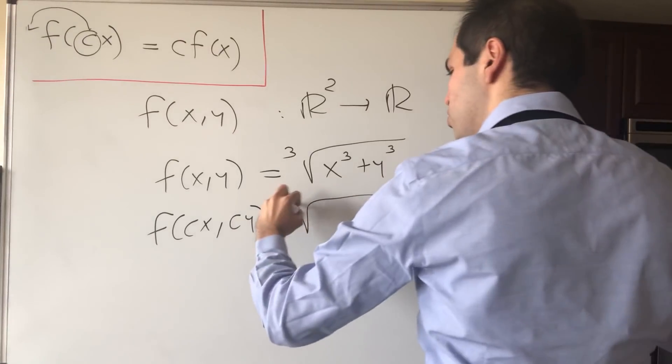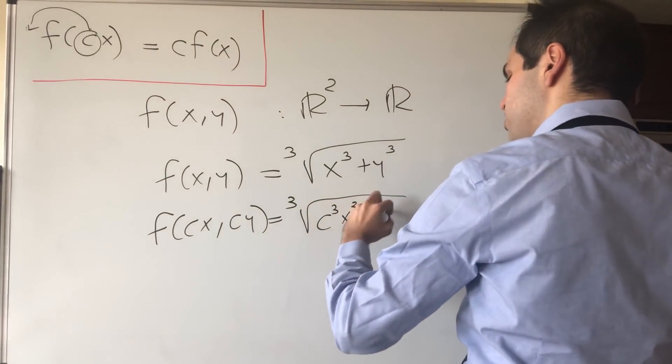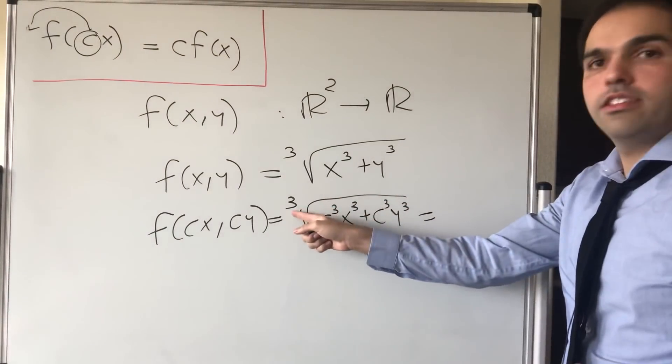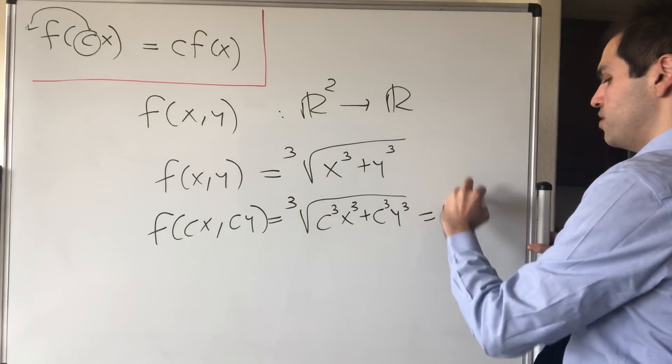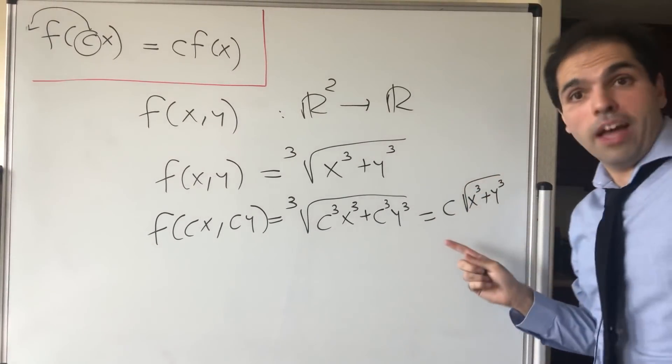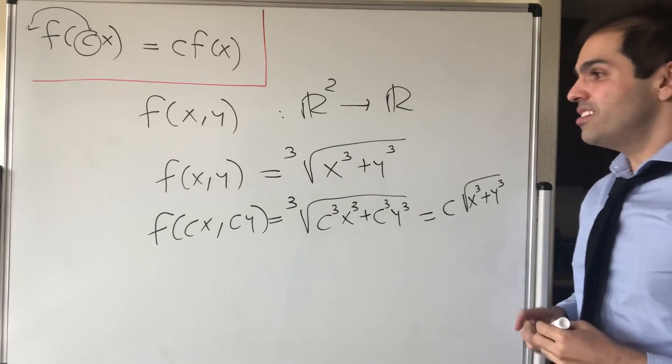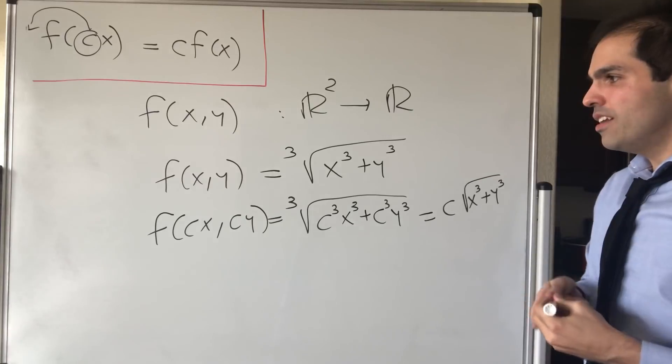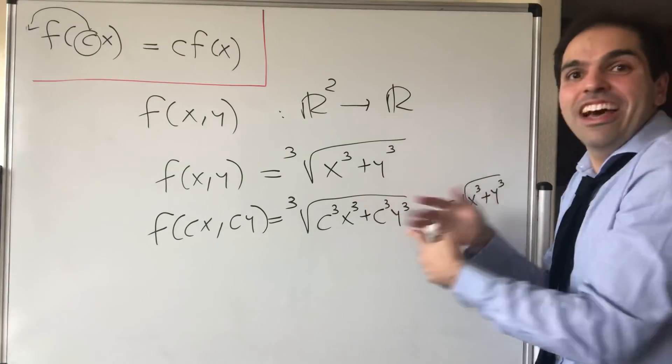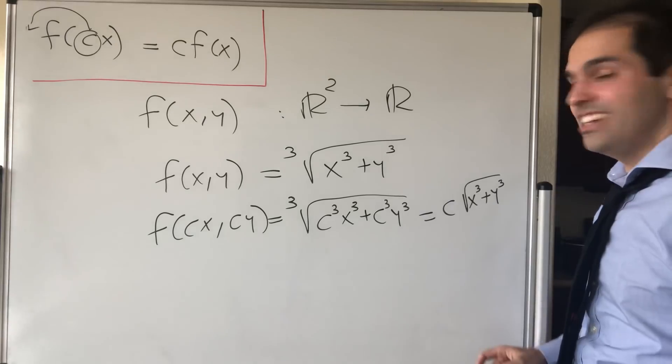that is cube root of c cubed x cubed plus c cubed y cubed. Then you can just pull out the constant c cubed with this cube root, then it just becomes c times cube root of x cubed plus y cubed. You cannot do with square roots because you would find an absolute value of c, so that doesn't work.